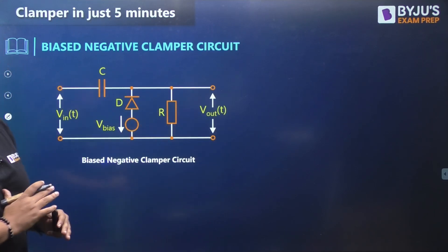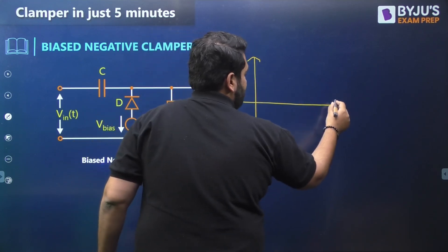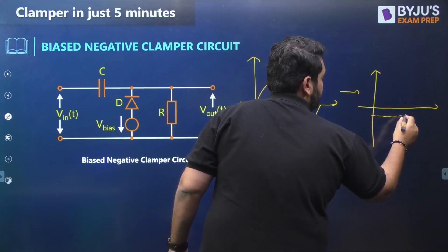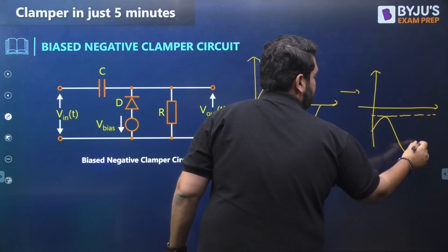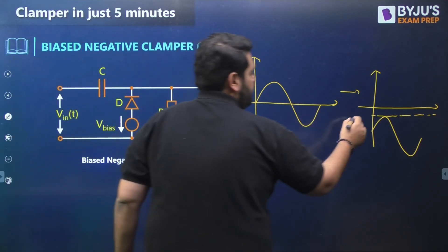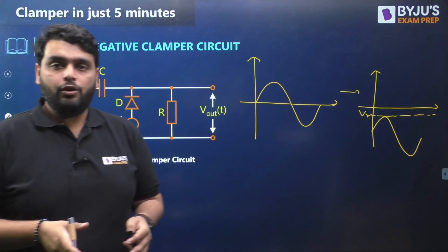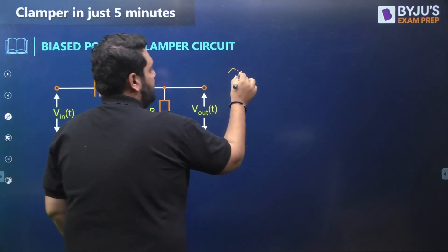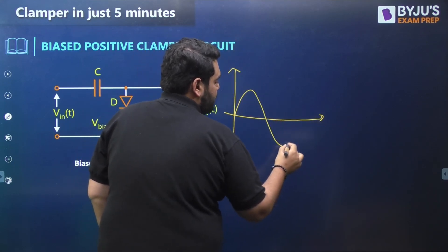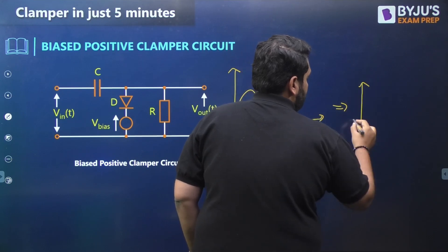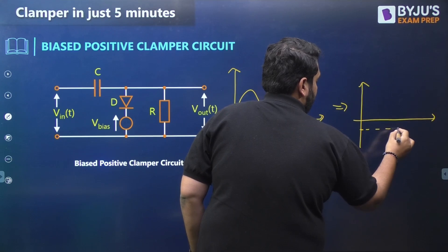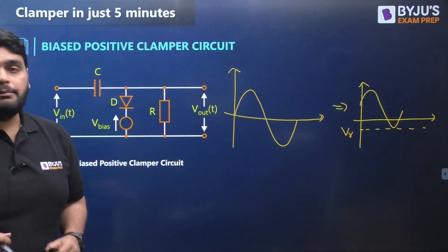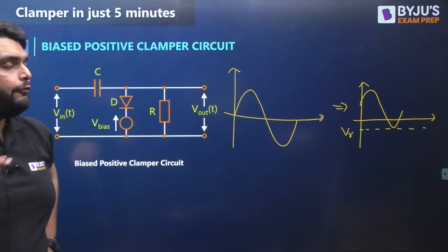Next we have a biased negative clamper circuit, where the input signal shifts downward with respect to some reference voltage — the waveform is shifted below that reference. Similarly, a biased positive clamper shifts the signal upward based on some reference. So we have basically four types of clamper circuits.